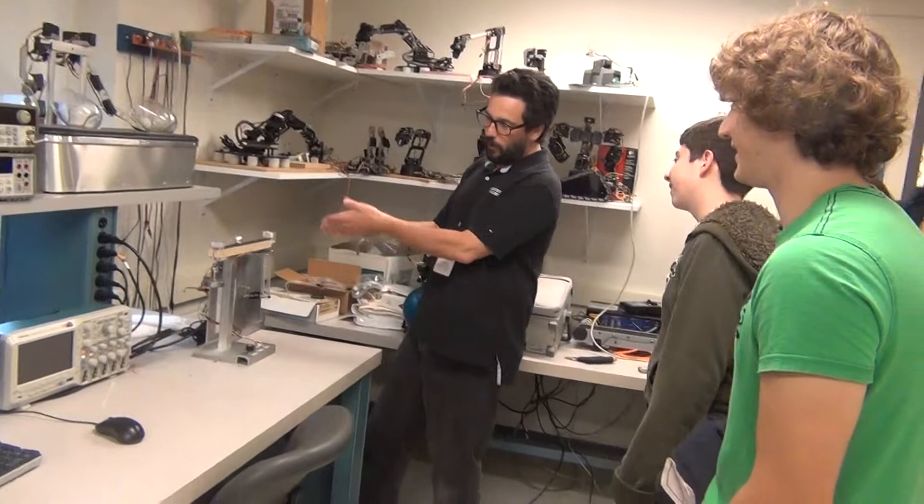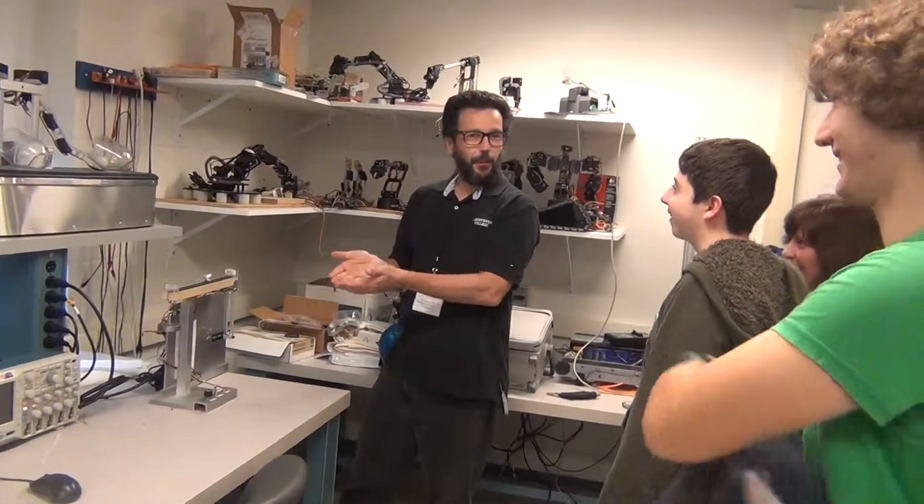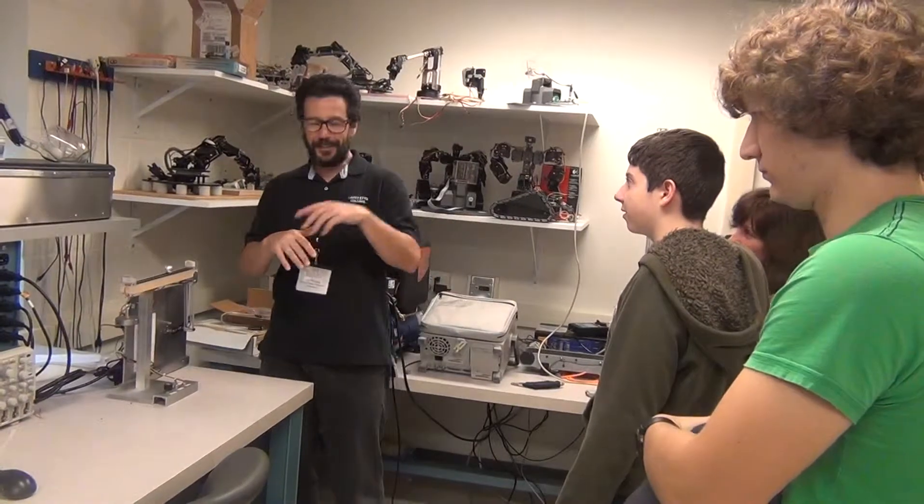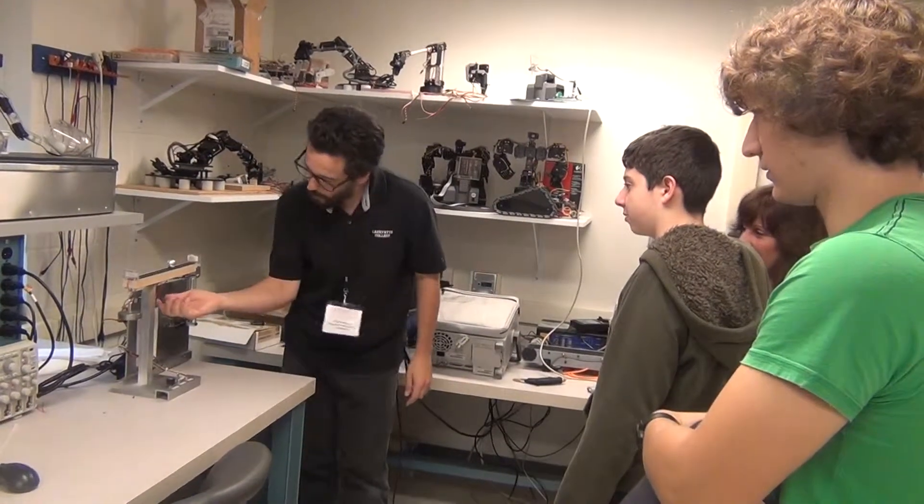So without the derivative, you get this oscillatory behavior. So this is like the U.S. Congress. You move too far to the right, you go to the left. You move too far to the left, you go to the right. But there's no anticipation of the direction of decreasing error and moving towards a goal, right? It's just go that way, go that way.